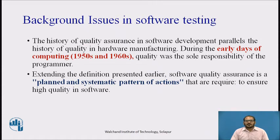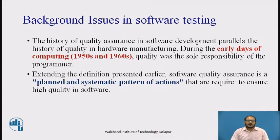The history of quality assurance in software development parallels the history of quality in hardware manufacturing. During the early days of computing — the 1950s to 1960s — quality was the sole responsibility of the programmer. Standards for quality assurance for software were introduced in military contract software development during the 1970s and have spread rapidly into commercial software development.